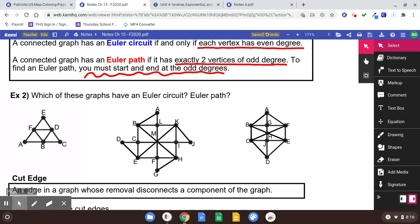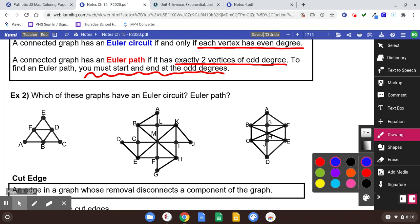Number two says which of these graphs have an Euler circuit? How about an Euler path? Really all it takes is look at the degrees of all the vertices. Here's a two, degree is four, degree is four, degree is two, degree is four, degree is two. See how every vertex has an even degree? That means there exists an Euler circuit.